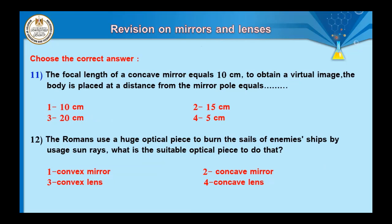Question number eleven: the focal length of a concave mirror equals 10 cm. To obtain a virtual image, the body must be placed at a distance less than the focal length. The virtual image is only formed when the object is at distance less than focal length. Among the choices, the correct answer is 5 cm — the only value less than 10 cm.